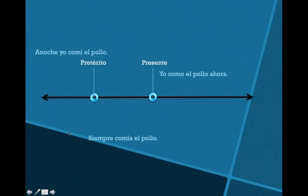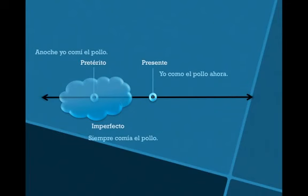That's why we can visualize the imperfecto as kind of a cloud — an imperfect, non-precise period of time. It would probably be a good idea to pause the video and copy down this visual as well.